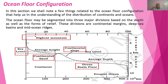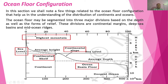The next important part we will deal with is ocean floor configuration. In this section, we shall note a few things related to the ocean floor configuration that help us understand the distribution of continents and oceans. The ocean floor may be segmented into three major divisions based on depth and form of relief. These divisions are: continental margin, deep sea basin, and mid-ocean ridges.